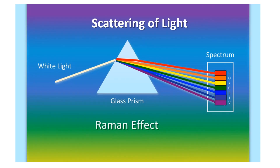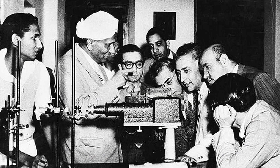On 28th February 1928, one of the greatest Indian physicists, Sir Chandrasekhar Venkatraman, announced his novel discovery on the scattering of light, which came to be known as the Raman Effect. It was a very important discovery that earned him a Nobel Prize in 1930.